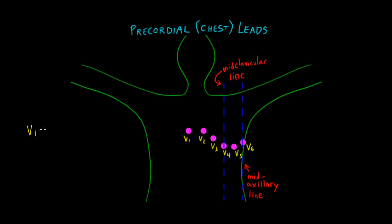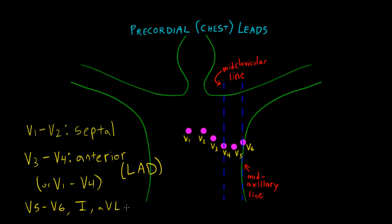V1 and V2 are referred to as the septal leads. V3 and V4 are the anterior leads. The anterior leads allow us to take a closer look at the anterior portion of the left ventricle, which is supplied by the left anterior descending artery. Note that sometimes V1 and V2 are included with V3 and V4 in comprising the anterior leads. As we mentioned before, V5 and V6, along with 1 and AVL, comprise the lateral leads.